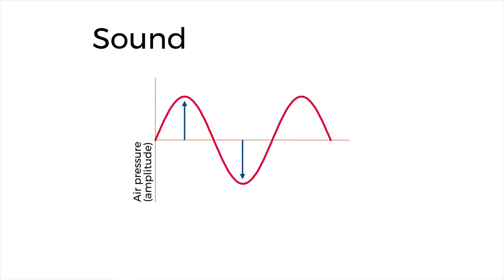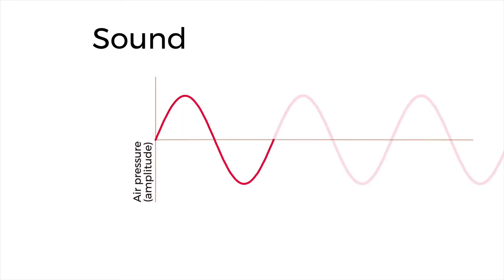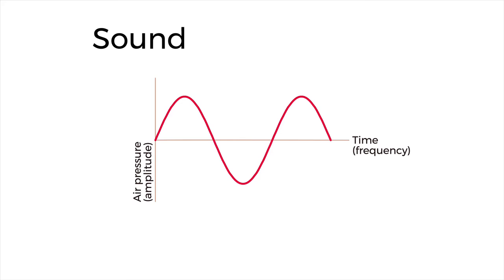Notice that the wave starts to repeat itself — I could theoretically draw this wave on forever and ever. Each of these repetitions is one cycle or period of the wave. The number of times it repeats per second is called the frequency. We measure frequency in hertz, and our brains perceive that as pitch. You're probably familiar with the 440 hertz tuning note A that is standard in most U.S. ensembles.